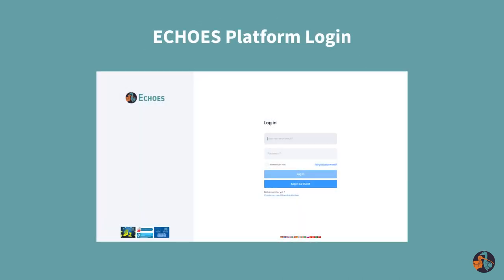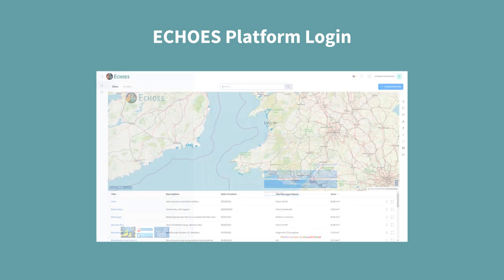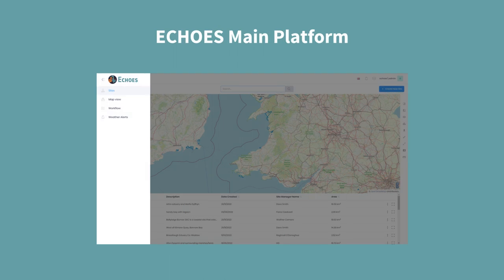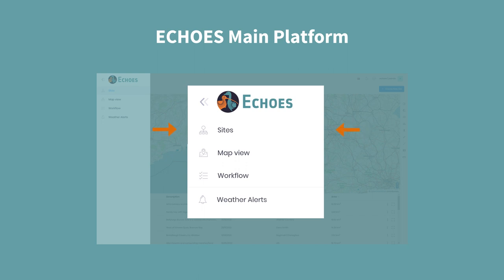You can log into the platform in one of two ways: as a normal user with the credentials given to you, or as a guest user. As a normal user you will see all areas of the platform; as a guest user certain functions will be limited. Once logged in, on the left-hand side you will see five icons, four of which are the main pillars of functionality. These house the various tools available for land managers and policy makers to help make decisions about their sites. The four sections are: Sites, Map View, Workflow, and Alerts.